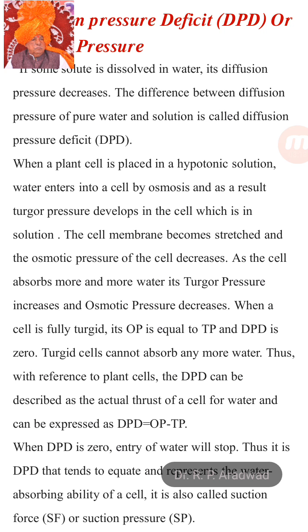So DPD is nothing but the thrust of the cell for water, and can be expressed as: DPD = Osmotic Pressure − Turgor Pressure. When DPD is zero, the entry of water will stop. Thus it is DPD that tends to equate and represent the water-absorbing ability of the cell, and it is also called suction force or suction pressure.